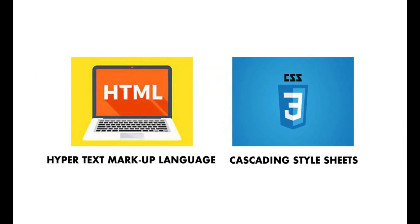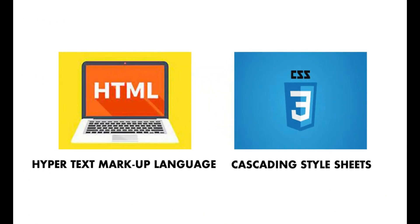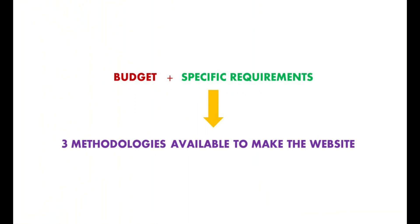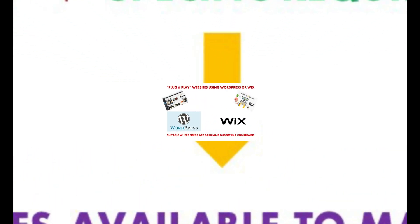Web pages for a website are created using the base coding languages — HTML, also known as Hypertext Markup Language, and CSS, also known as Cascading Style Sheets. Typically, depending on the budget and specific requirements of their client, web designers adopt one of the following three methodologies to create a website.